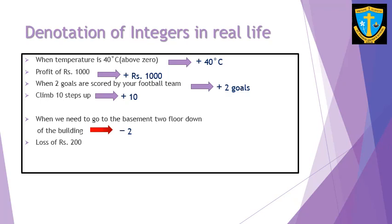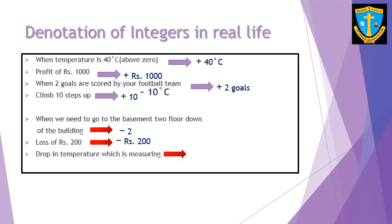If you suffer a loss of rupees 200, it will be negative rupees 200. A drop in temperature, for example negative ten degrees Celsius, carries a negative sign. All these examples show us how integers are denoted in real life — where we need a positive sign and where we need a negative sign.